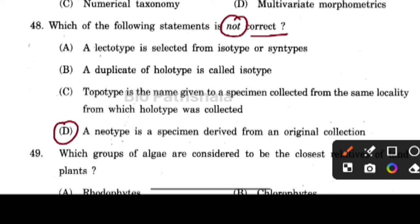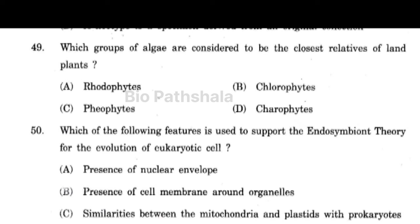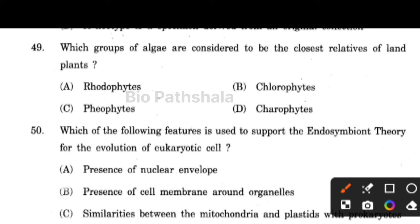Next question: which group of algae are considered to be the closest relative of land plants? That is option number D — Charophytes.